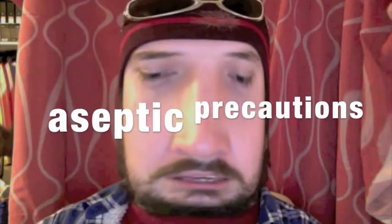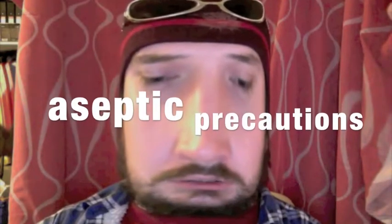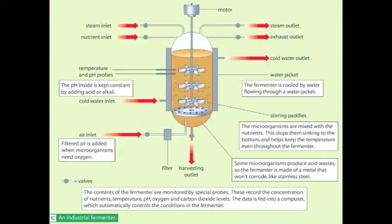Before the fermenter is filled with fresh nutrients and culture, measures must be taken to avoid contamination by unwanted organisms. These measures are called aseptic precautions. The inside of the tank and all the pipes are cleaned and sterilised. This is usually done with very hot steam under high pressure. If these precautions are not taken, two problems might arise.